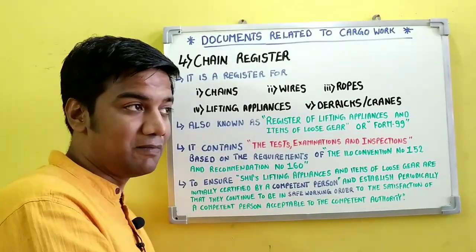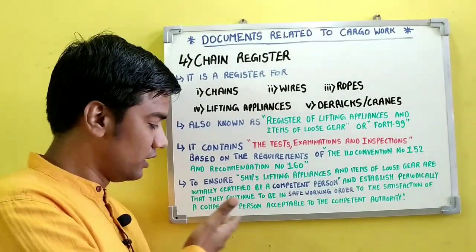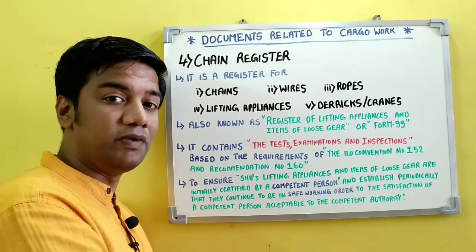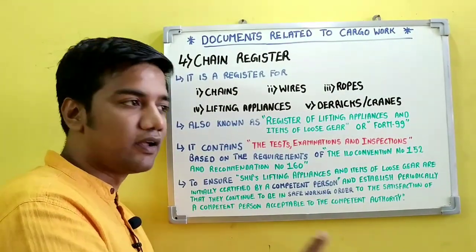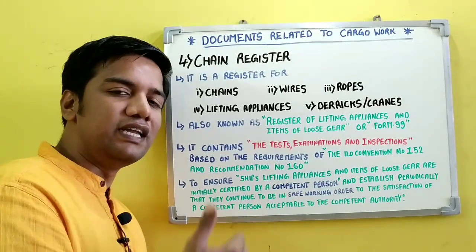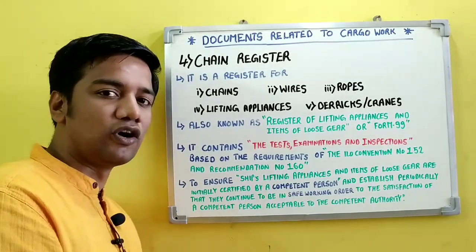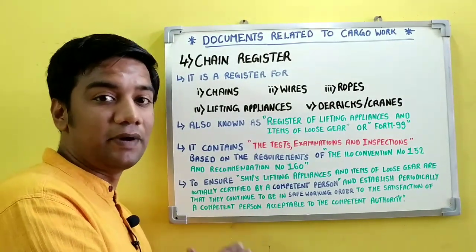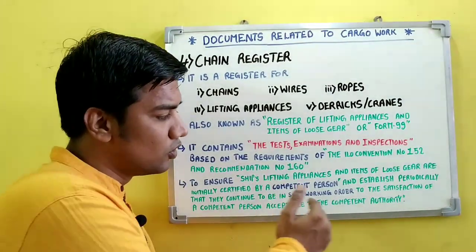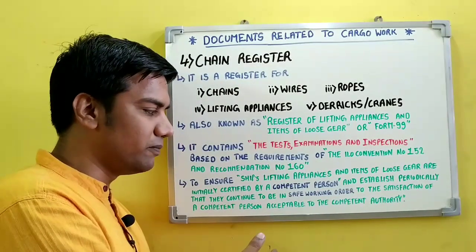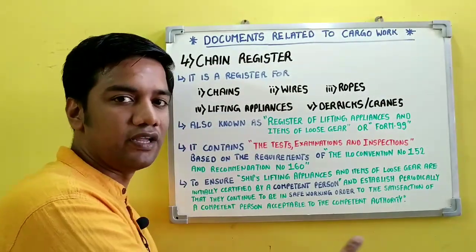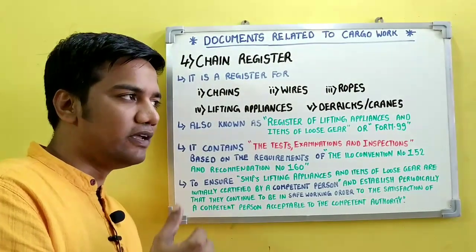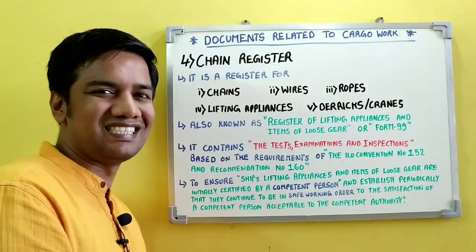The purpose of the chain register is to ensure that the ship's lifting appliances and items of loose gear are in safe working order, initially certified by the competent person, and also to establish that they continue to be in safe working order periodically. Annual testing, examinations, and inspections are carried out by the competent person to the satisfaction of the competent authority.